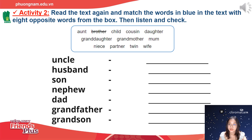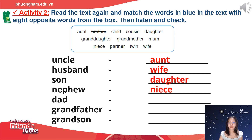Alright, now let's listen to the audio — Starter unit, vocabulary, exercise 2. The audio presents: mom, dad, niece, nephew, wife, husband. Now let's check the answers: uncle — opposite with aunt; husband — opposite with wife; son — daughter; nephew — niece; dad — mom; grandfather — grandmother; grandson — granddaughter.